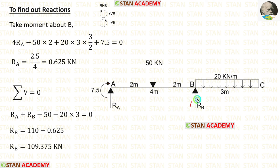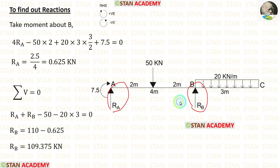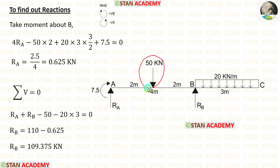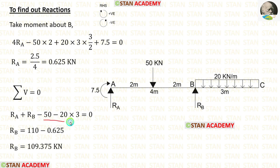Now to calculate RB, we apply the condition sigma V = 0. RA and RB are acting upwards, so both are positive. The point load 50 kN and UDL 20 kN per meter are acting downwards, so both are negative. We already know RA, so applying these values we get RB.